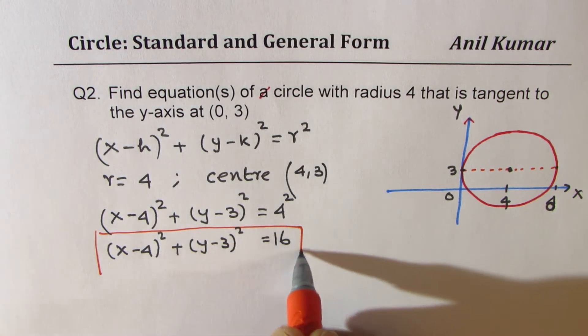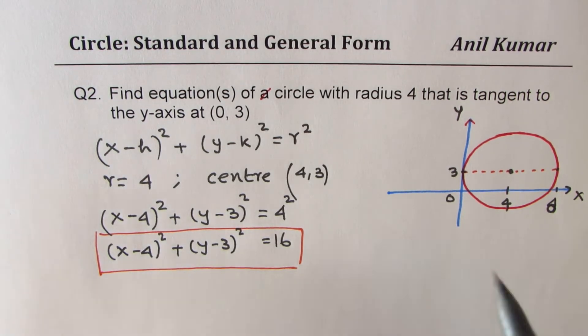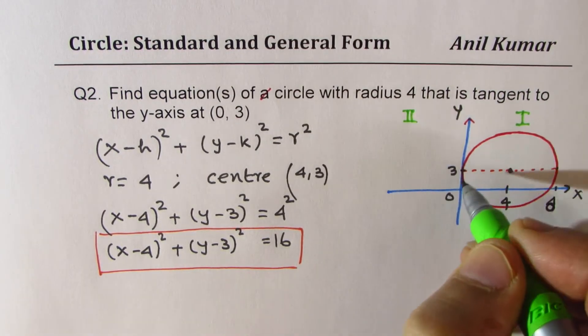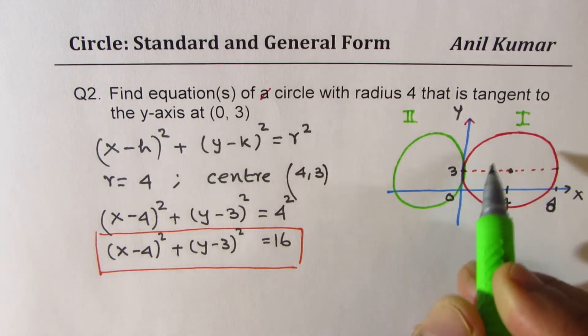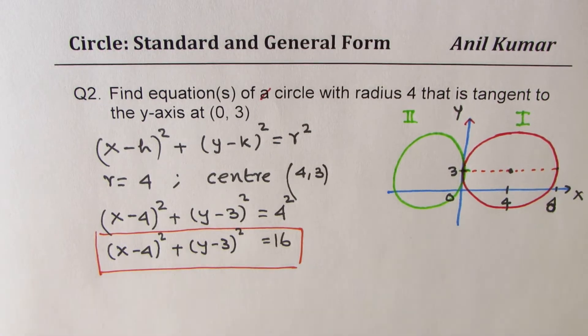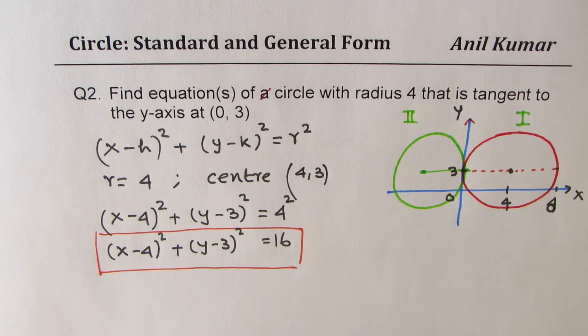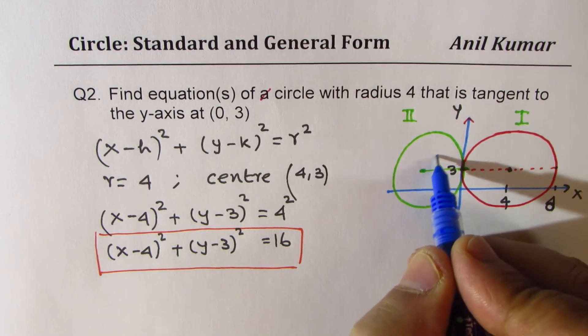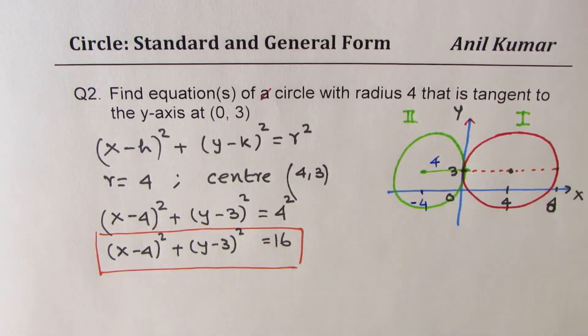Now, can we have two equations? That is what you have to think about. With the given conditions, we could have this circle also in quadrant 2. Let's look into this circle. Now here also, we have tangent at a given point. Now if I make this radius as 4, in that case, it also meets the criteria. So this point will be now minus 4.